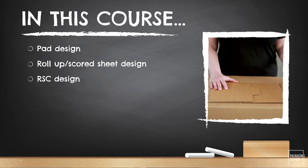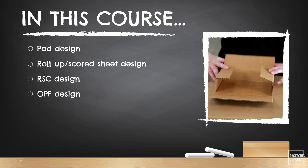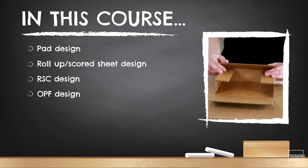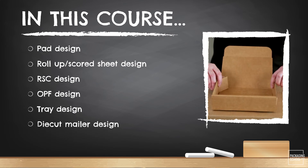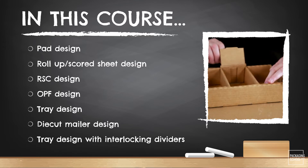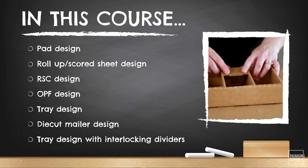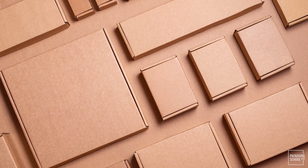You will also learn to design a roll-up or scored sheet, a regular slotted carton or RSC, a one-piece folder or OPF, a tray, a die-cut mailer, and for our final piece, a tray with interlocking dividers. Each of these designs builds on the previous, like building blocks. The technique you learn from the scored sheet will also be used in the RSC, and so on.